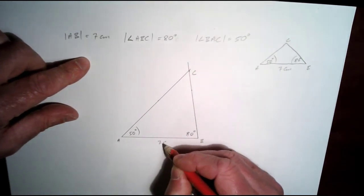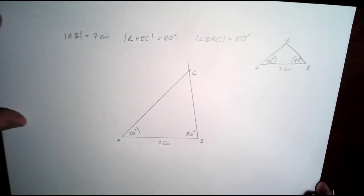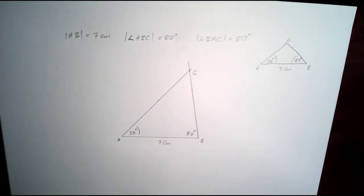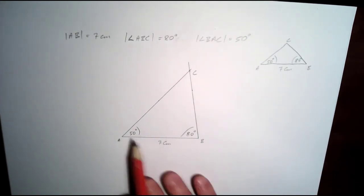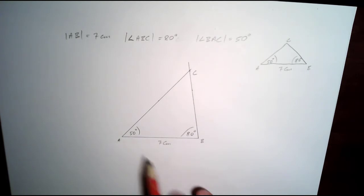So that's it really. We've drawn our triangle, 7 cm and 2 angles on either side. At A is 50 degrees, at B is 80 degrees.